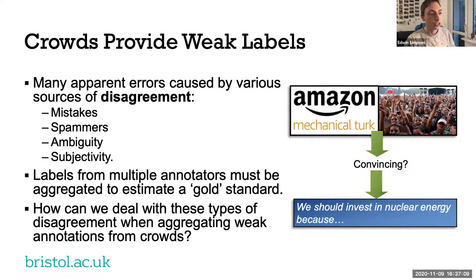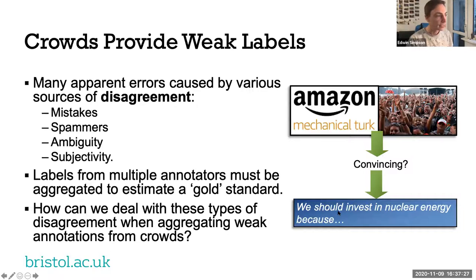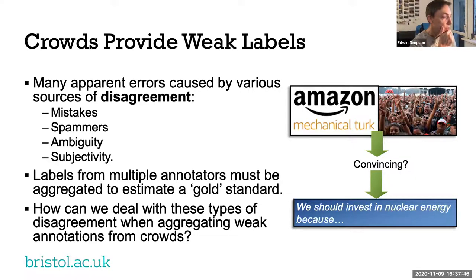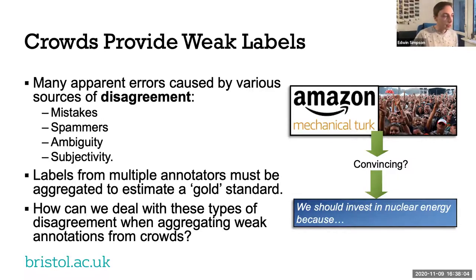Those are two types of errors, but you've also got tasks that are ambiguous by nature — not everyone agrees on what the correct annotation should be. This is particularly important in text and language data. For example, asking crowd workers how convincing an argument is — that's not a question with a clear answer. Related to that is subjectivity: some people just won't agree because they have different viewpoints. So we usually want to get some kind of gold standard by asking multiple annotators to label each piece of data and then aggregating those labels.